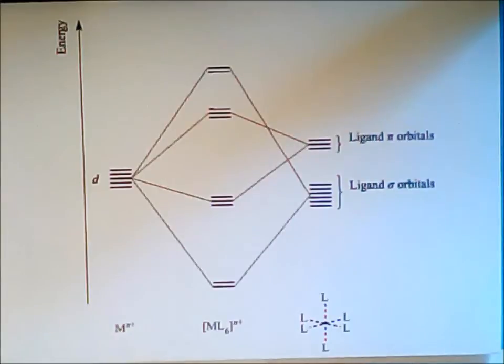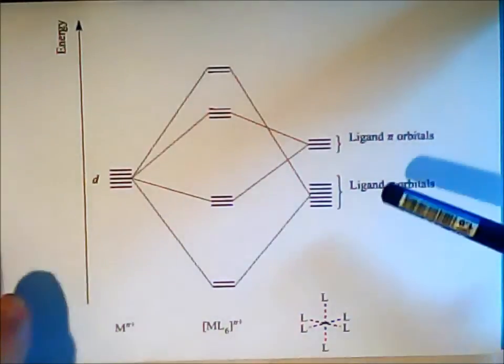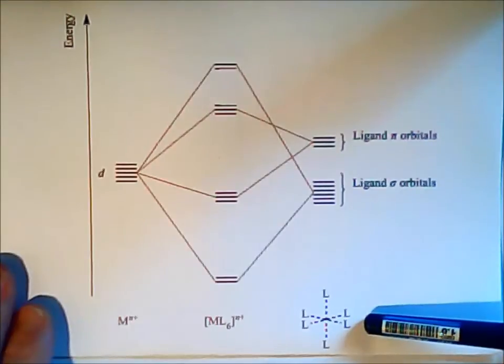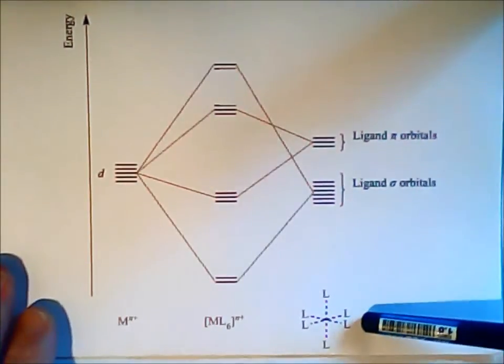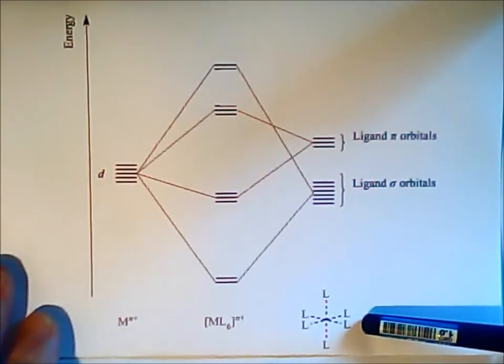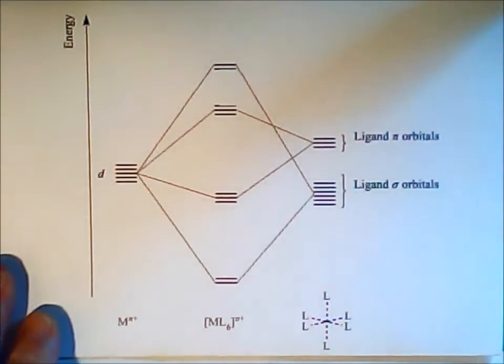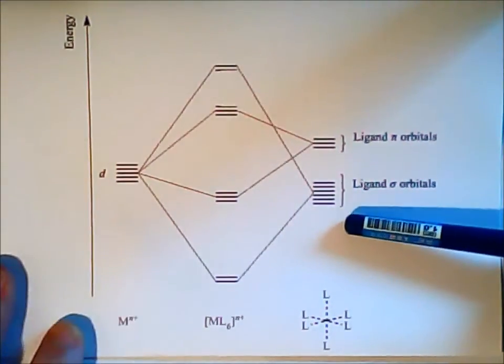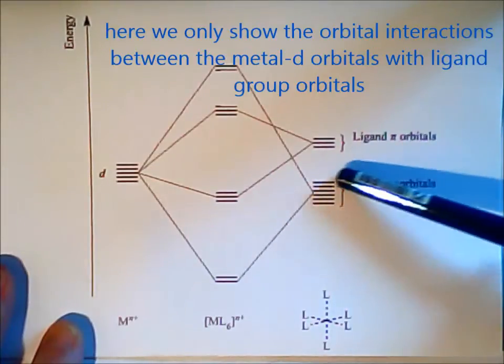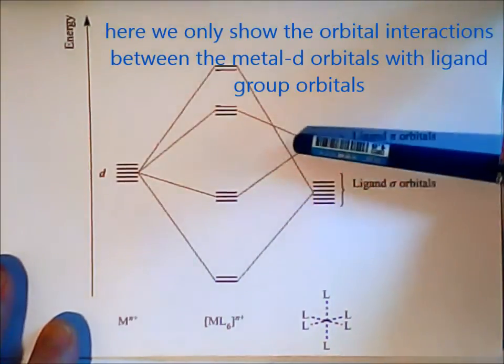So what happens in the case the ligands here have also filled p orbitals, for example halogen like chlorine? There we have an additional interaction we should have a look at. First again we just draw the interaction between the ligand group orbitals here as before.